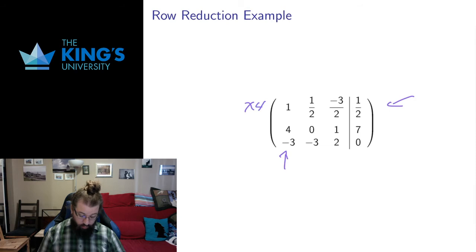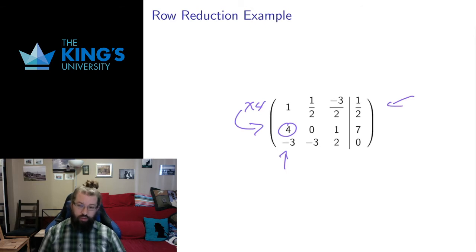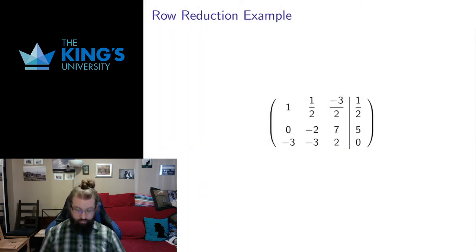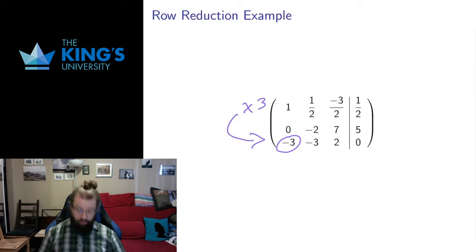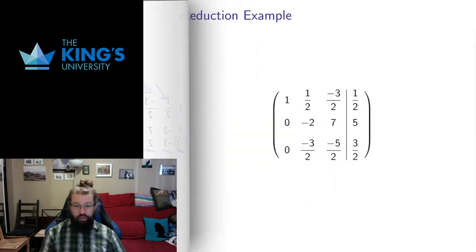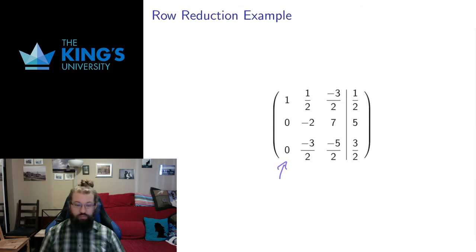This is a 4, so I can multiply the first row by 4 and subtract it from the second row — that gives 4 minus 4 here, which goes away. That arithmetic gives me the updated second row. Then I have a negative 3 I want to clear, so I multiply the first row by 3 and add it to the third row — that gives negative 3 plus 3, clearing that first entry. That arithmetic gives me the updated third row. Now the first column is complete: I have a leading 1 with zeros below it.